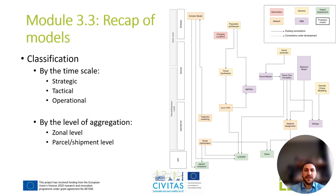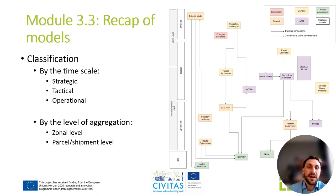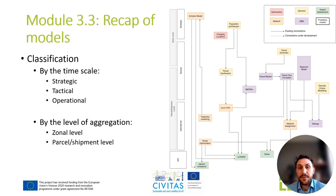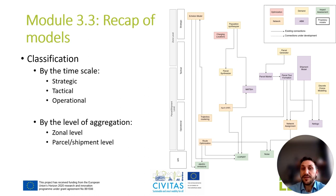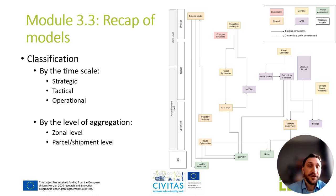This is the image of the model library as we have seen before. Here, we have classified our models by time scale — whether they are at a strategic level, a tactical level, or an operational level — or by the level of aggregation, whether they are at a shipper level or a parcel shipment level. We have also seen the different types of models that we have, whether it's an agent-based model, a demand model, an optimization model, or a KPI model.